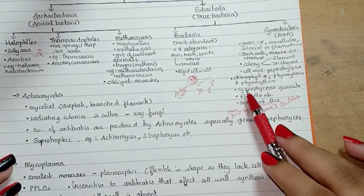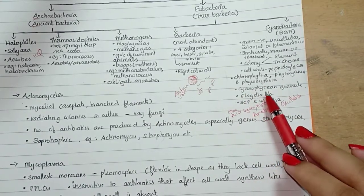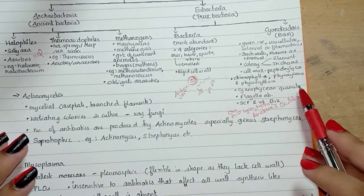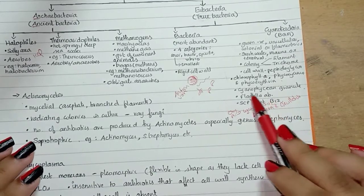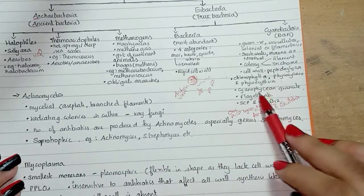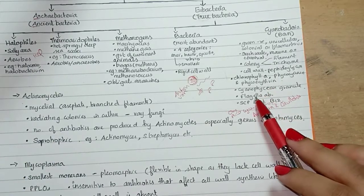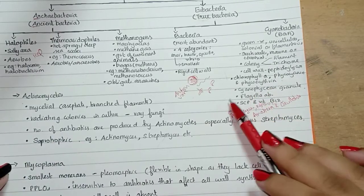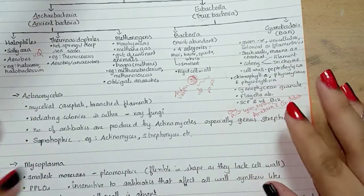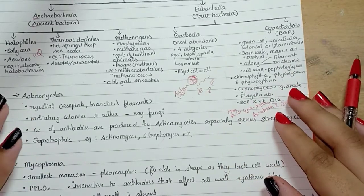The reserve food material in blue-green algae is cyanophysin granules or alpha granules. They reproduce by vegetative and asexual methods.